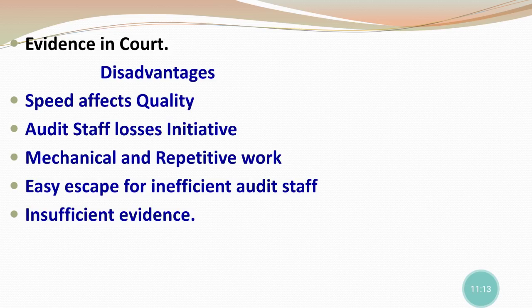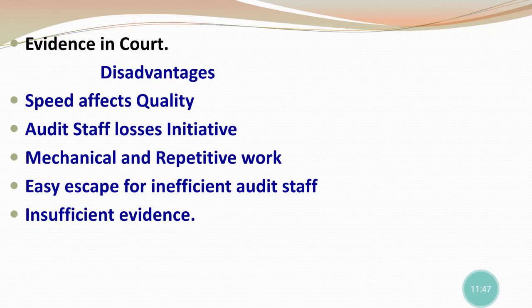Number two: Audit Staff Loses Initiative. This means all the assistants have been allocated specific work, so no one can take initiative on their own. Because he has restricted work — he has been given specific work and is responsible only for that — he cannot take initiative to work more or give suggestions in different areas. For example, if I am doing vouching and I give a suggestion about verification, that person might say 'vouching is your work, why are you interfering in verification?' — this kind of problem arises. So audit staff loses their initiative.